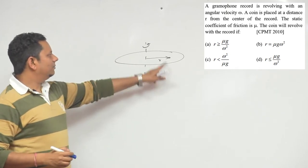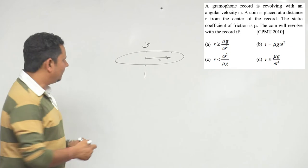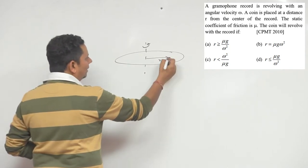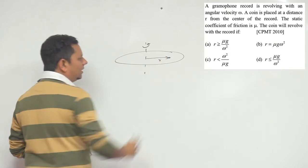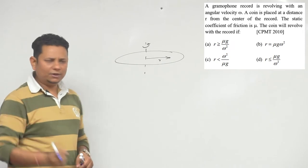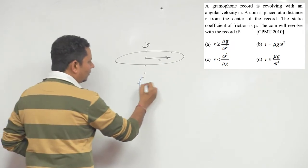For the coin to rotate with the record, the friction force must provide the necessary centripetal force. So friction force should be greater than or equal to mv²/r, or equivalently, mrω².